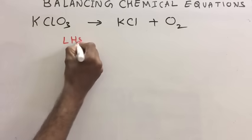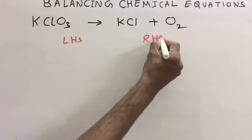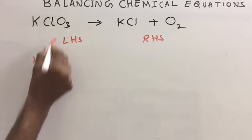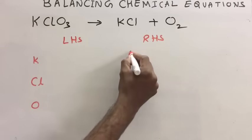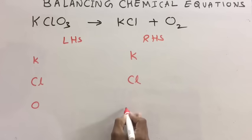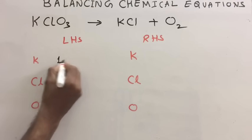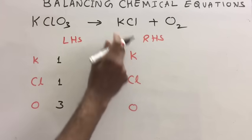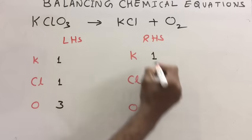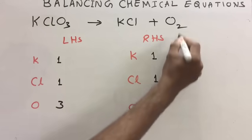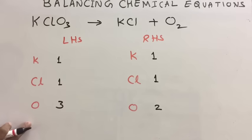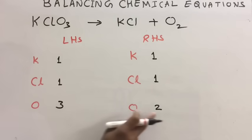Let us balance one more equation. Write LHS and RHS. On LHS: potassium, chlorine, and oxygen. Same elements on RHS. Number of atoms — potassium on LHS one, chlorine one, oxygen three. On RHS: potassium one, chlorine one, oxygen two. Potassium and chlorine are already balanced. Now check oxygen: three on LHS, two on RHS.